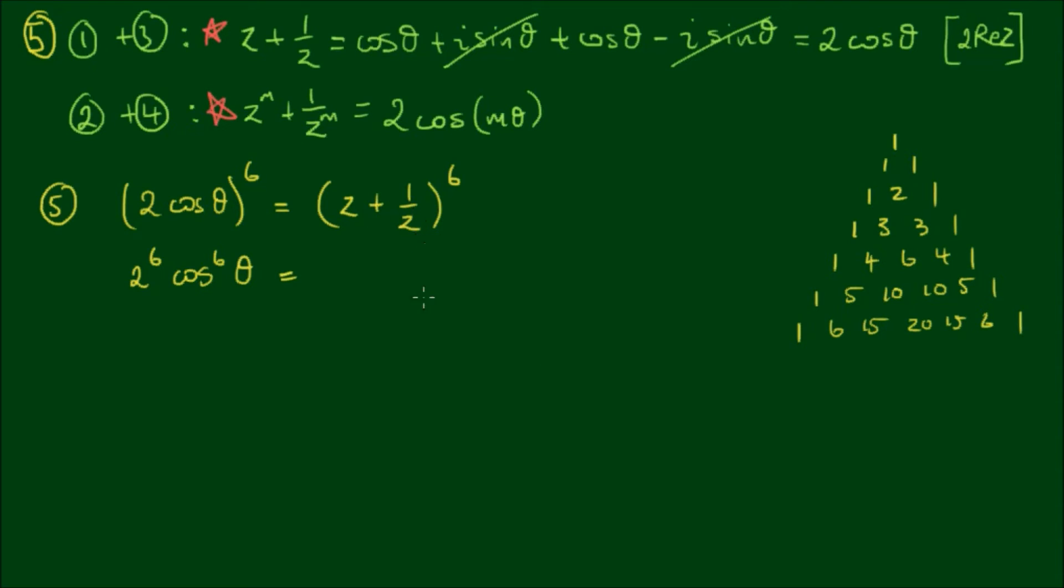So binomially expanding this. The first term is raised to the power of 6 with coefficient 1, plus the second coefficient 6 by the first term to the 5th power. So the power is reduced by 1. And then we times this by the second term, plus 15 by z to the 4th, and the pattern continues.